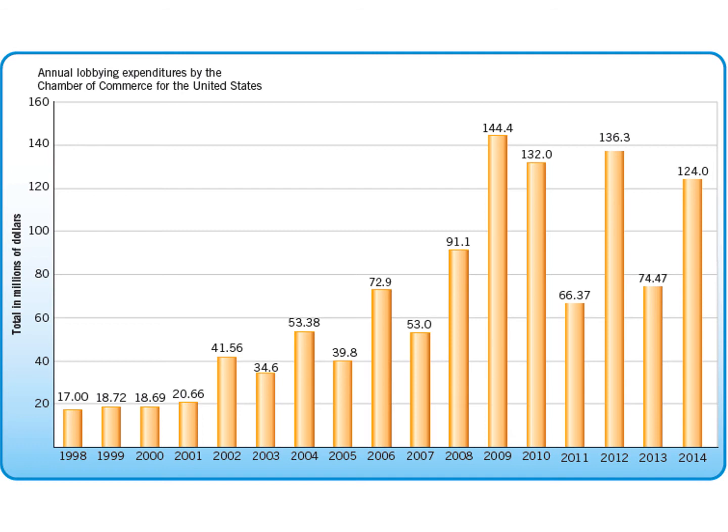Here you can see the annual lobbying expenditures for the Chamber of Commerce of the United States — one of the interest groups I talked about. You can see they've consistently spent tons of money year after year to promote their causes. They were the top spending interest group in 2014, spending $124 million.